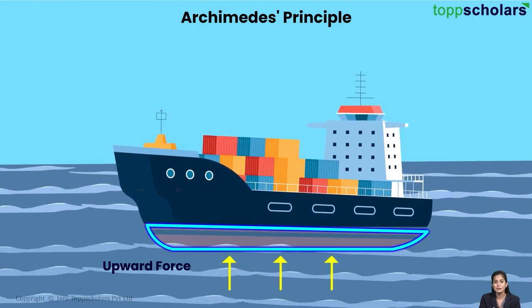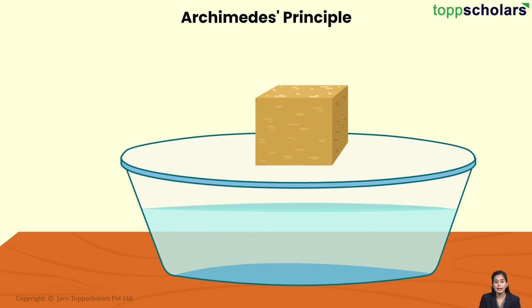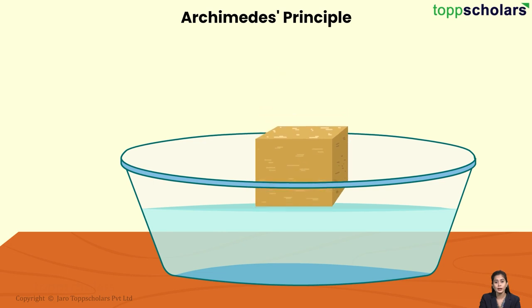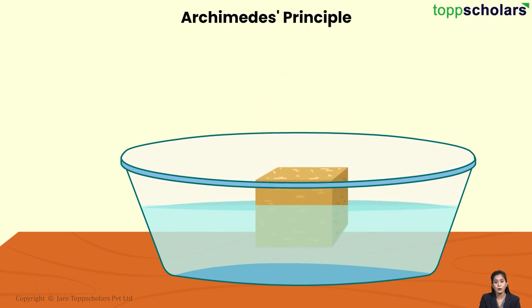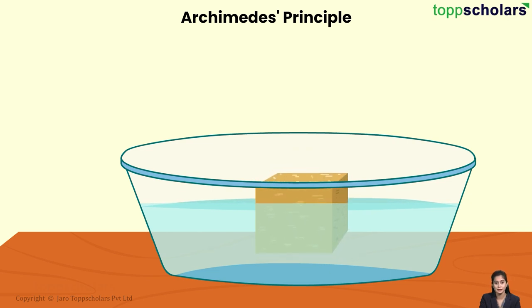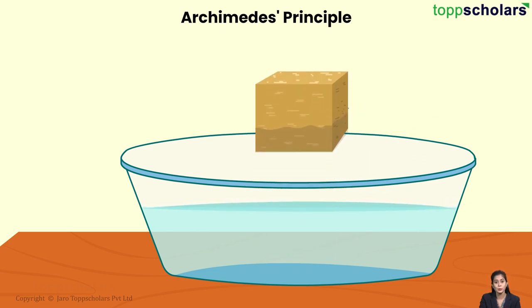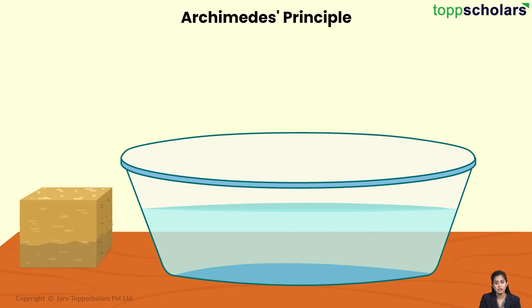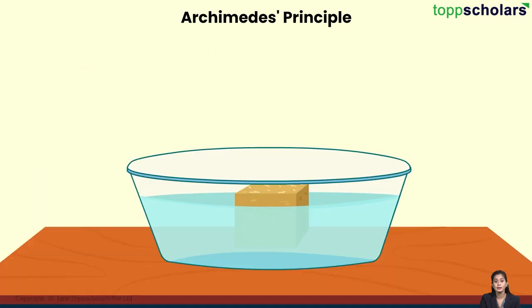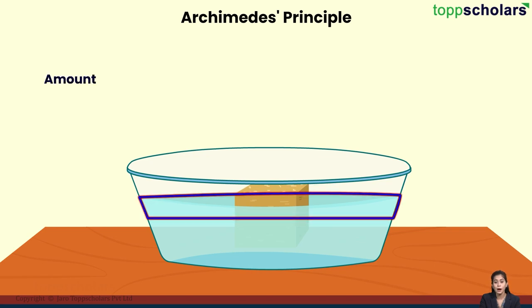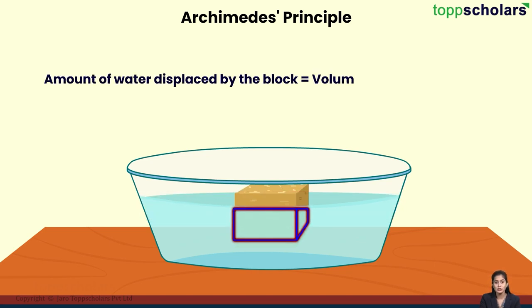Let's go into the details. When you place a wooden block in a tub, you see the water level rising — that is, the water gets displaced. As soon as you take the block out, the water rushes in to fill that place of the block. This simply shows that the amount of water displaced by the block is equal to the volume of its submerged part.